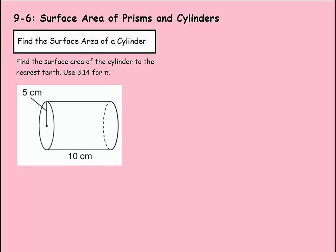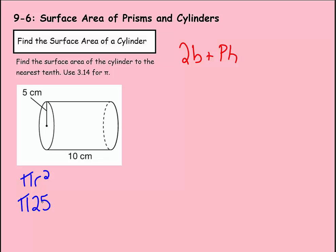Now we can find the surface area of a cylinder using the same formula: 2 times the base plus the perimeter times the height — where perimeter is circumference, since that's the perimeter of a circle. The area of the circular base is pi times radius squared. Since the radius is 5, that's pi times 25. 3.14 times 25 is 78.5, so that's the area of the base.